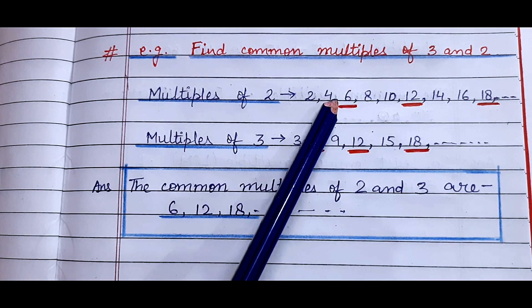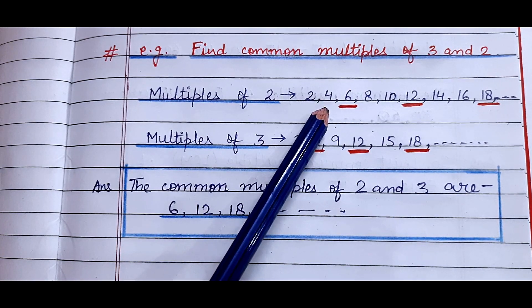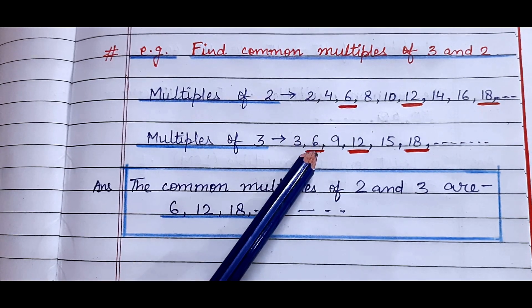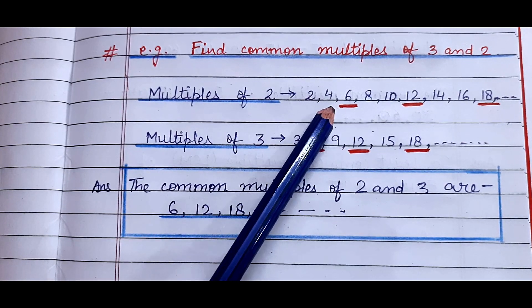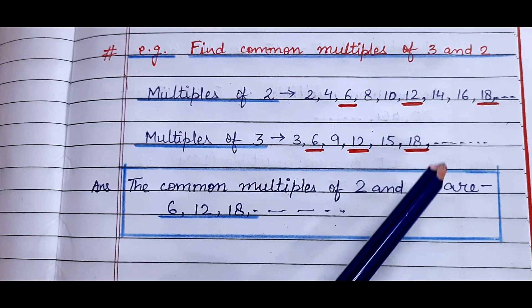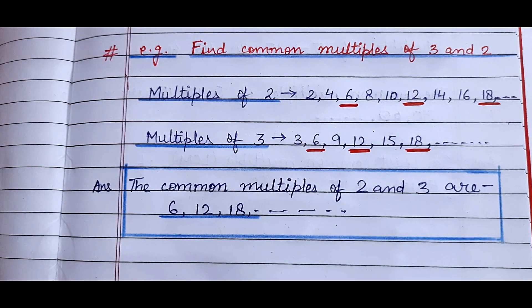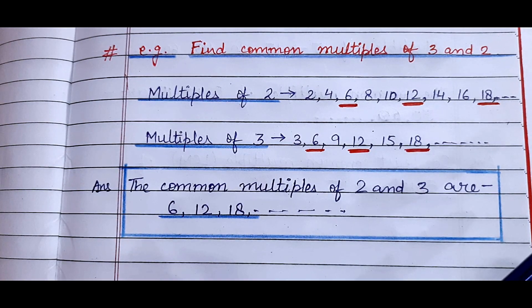So now we have to find the common numbers. See, I have highlighted the common numbers or the common multiples. 6 is common, similarly 12 is common, similarly 18 is common, and maybe some more numbers will be common if we write the multiples further.